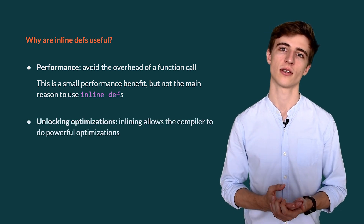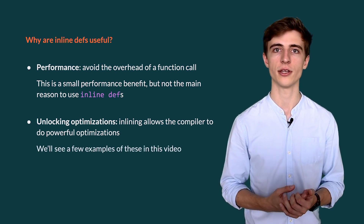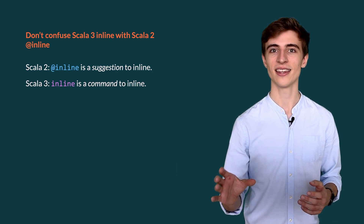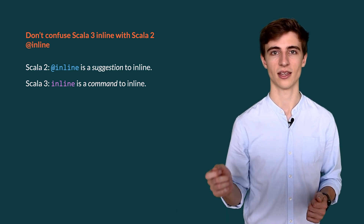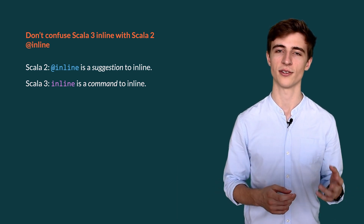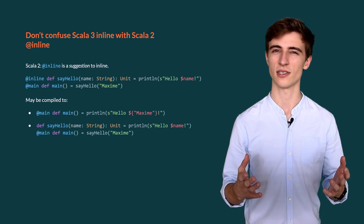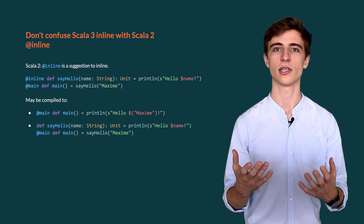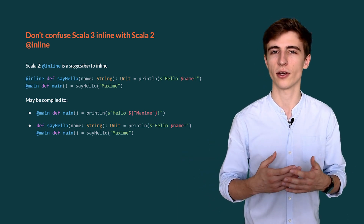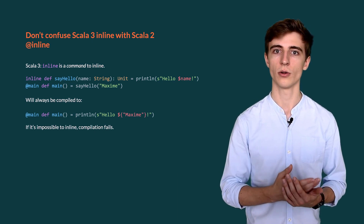The main use is to unlock optimizations that the compiler can do when it's inlining, and we'll take a look at many of these optimizations in this video. If you're coming from Scala 2, don't get confused — inline is not the same as @inline. Scala 3's inline keyword is a command to inline, while Scala 2's @inline annotation is just a suggestion for the compiler to maybe inline this function. This means that in Scala 2 the sayHello method may or may not be inlined — it's not a guarantee. In Scala 3 we have this guarantee: we inline the function or we fail compilation.